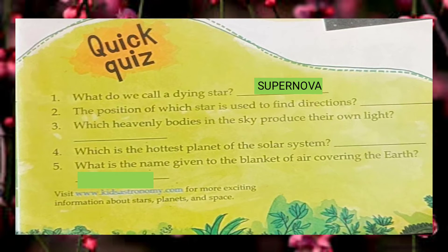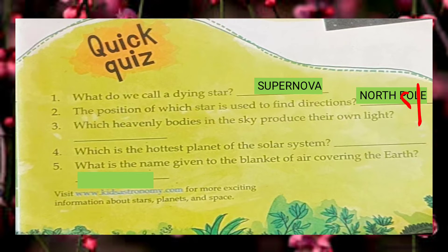The position of which star is used to find direction? That is the North Star. Which heavenly bodies in the sky produce their own light? The correct option is stars.